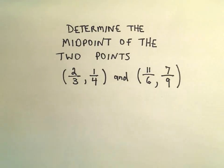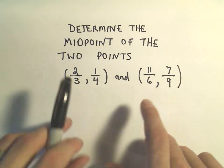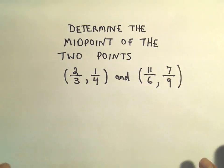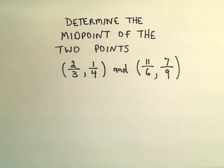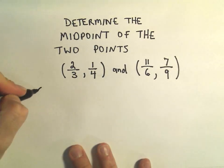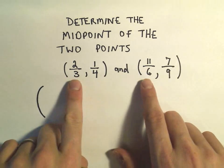So okay, determine the midpoint of the two points, two-thirds comma one-fourth and 11 over 6 comma 7 over 9. Wonderful numbers, a bunch of fractions. Oh Patrick, why are you doing it to us? So to find the midpoint of the two points...